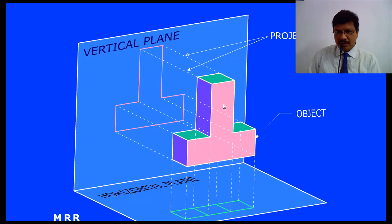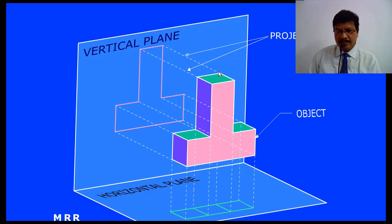When you are seeing from the front, this pink color surface you can see. So you are getting a projection like this — this is called front view. When you are seeing from the top, you can see only these green color surfaces. As a result of that, you will get a figure like this — this is called top view. These are called orthographic projections.